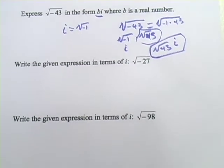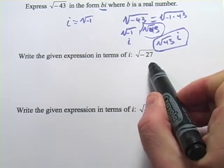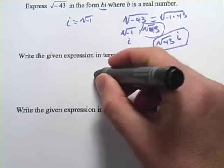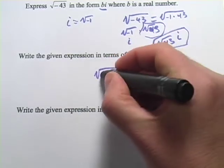Let's try another one. This one says write the given expression in terms of i, and we've got the square root of negative 27. So, I want to factor out that negative 1.